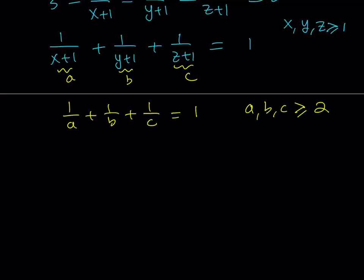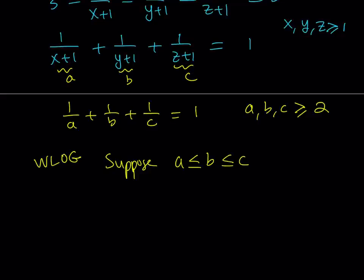A, B, C are positive integers and they can't be 1 either. Now what we're going to do is look at this equation. This is a very special type of equation — we're going to use inequalities. Without loss of generality, I'm going to suppose that A is less than or equal to B, and B is less than or equal to C. But this implies that the reciprocals are in the reverse order: 1 over C is less than or equal to 1 over B, and that is less than or equal to 1 over A. These are not negative or zero, so it's okay to write them as reciprocals and the sign is not going to change. Now we have a really interesting situation because we're able to compare the reciprocals.